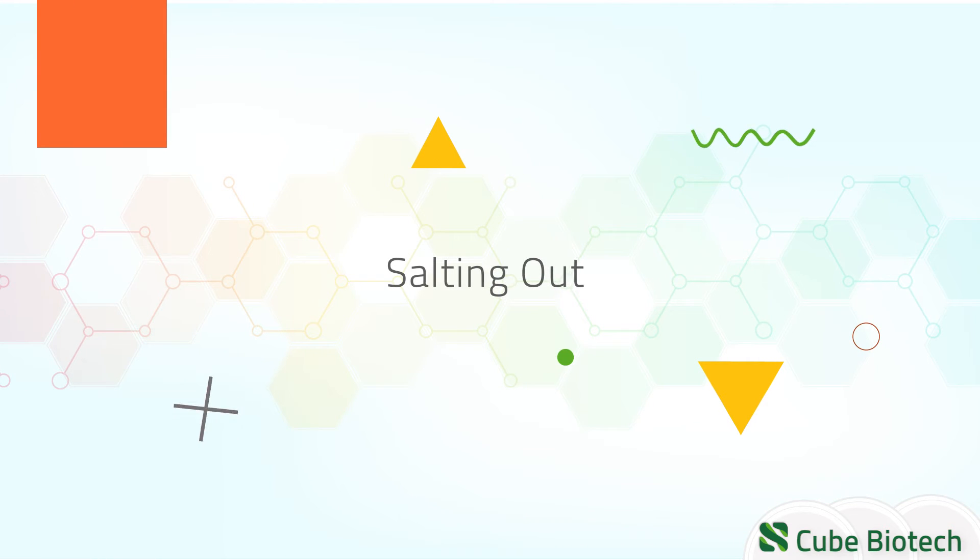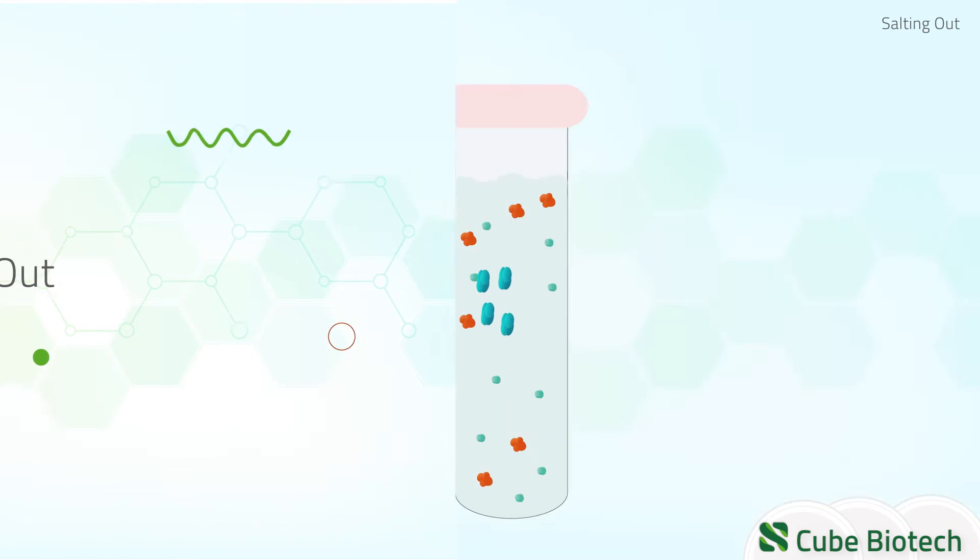Salting out is based on the idea of decreasing the solubility of a protein dissolved in water by adding salt such as aluminum sulfate.